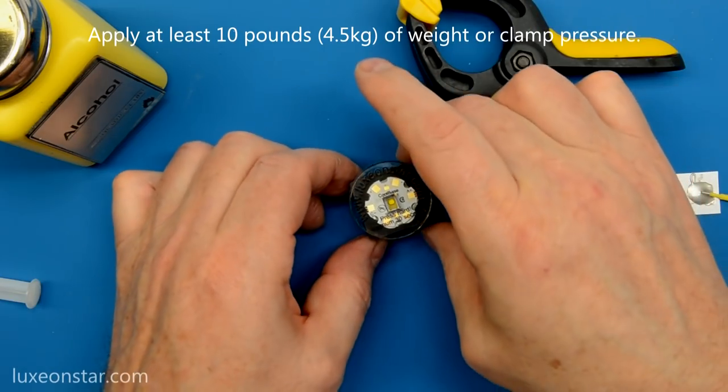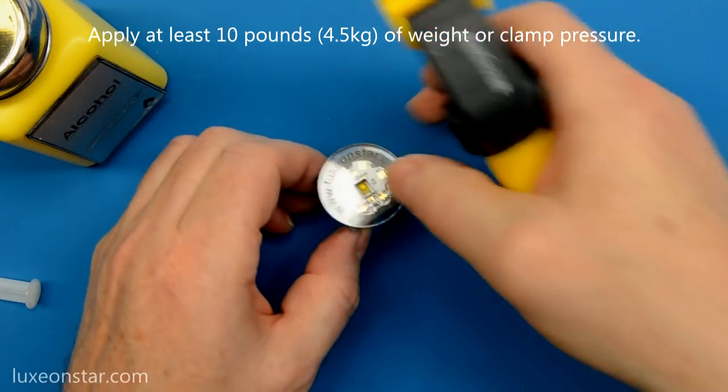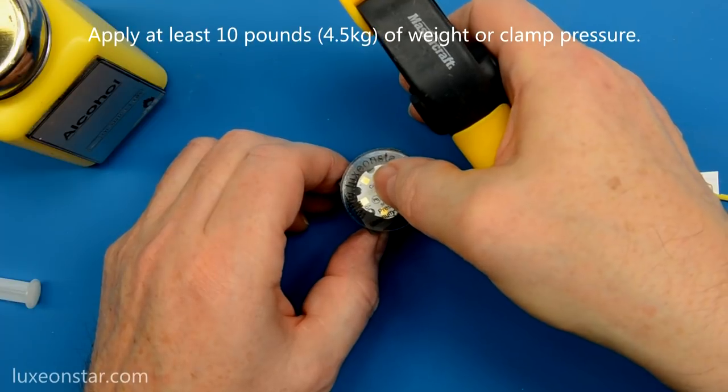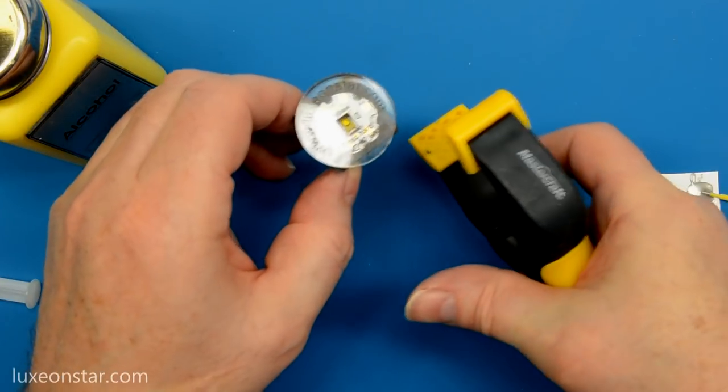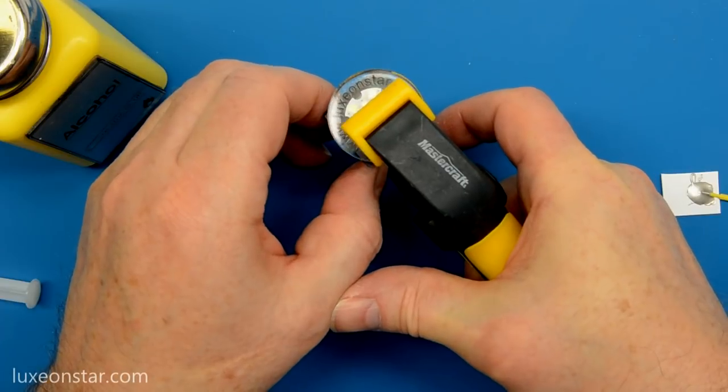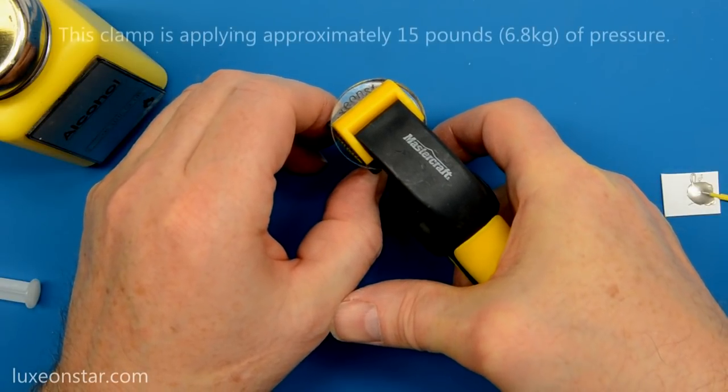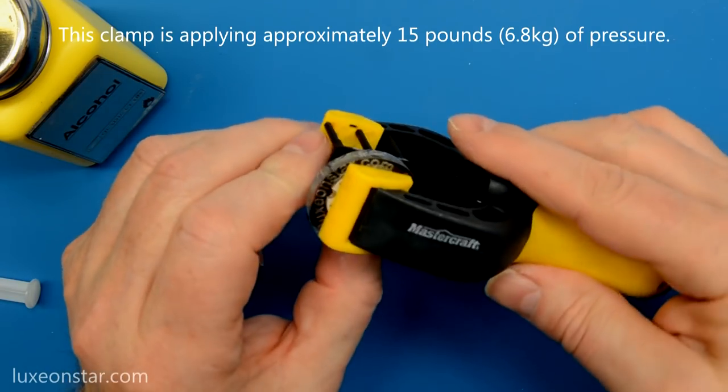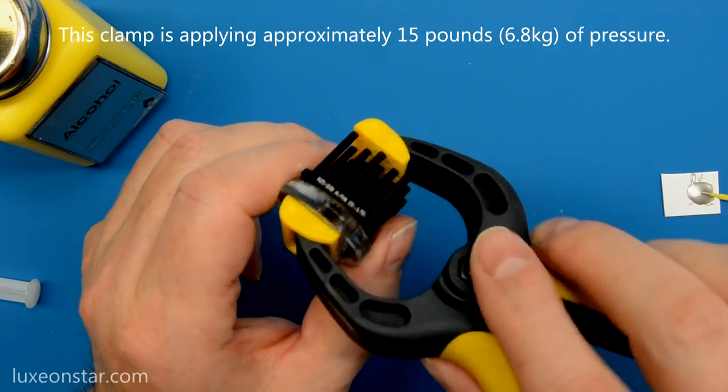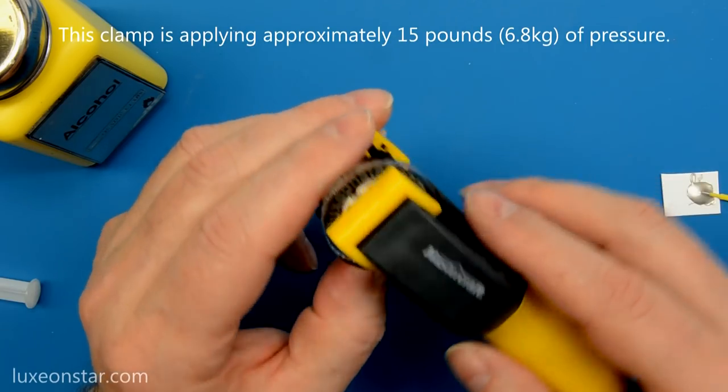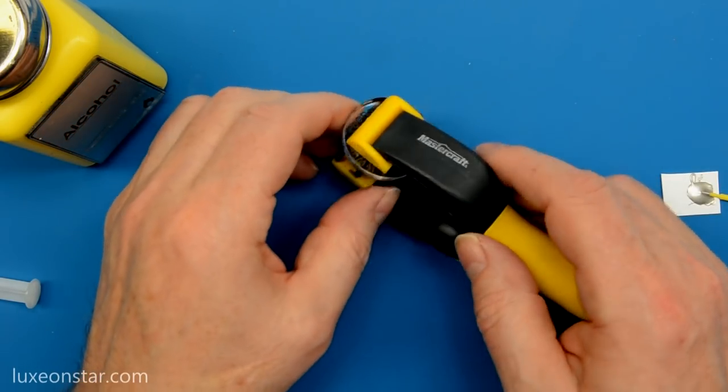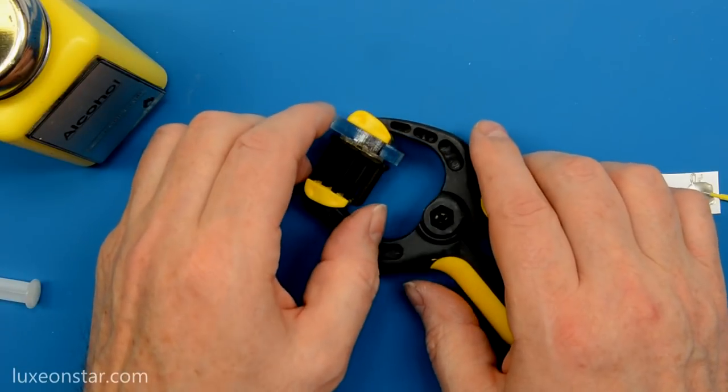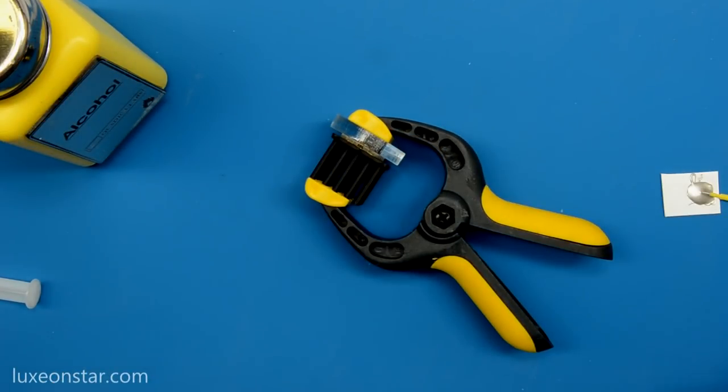I prefer to use a clamp. So you want to very carefully position your press in the middle, careful you don't move your LED around, and then very gently drop your clamp in place. Make sure that everything is still in position. And then let that sit for about ten to fifteen minutes to set up. It takes about 24 hours to fully cure, but you can have a look at it after about ten to fifteen minutes. It won't move after that.